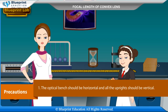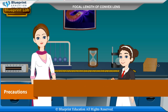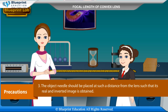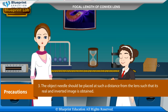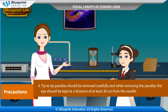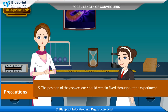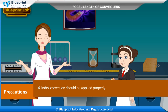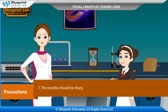Precautions: The optical bench should be horizontal and all uprights should be vertical. The tip of the object needle, centre of the lens, and tip of the image needle should be at the same height. The object needle should be placed far enough from the lens to obtain a real and inverted image. Tip-to-tip parallax should be removed carefully, with the eye kept at least 30 cm from the needle. The convex lens should remain fixed throughout the experiment. Index correction should be applied properly, and the needles should be sharp.